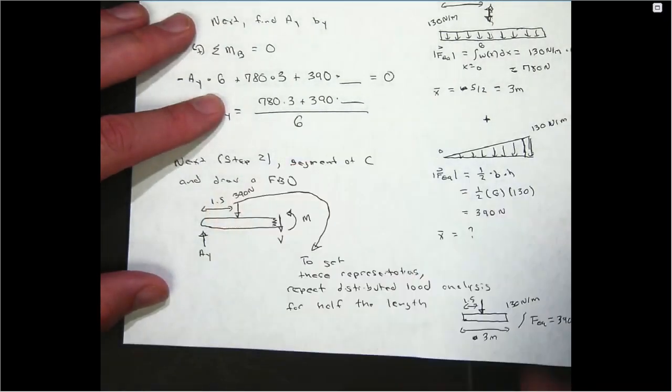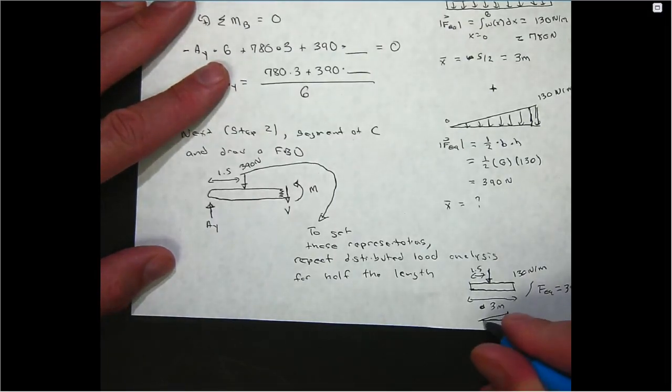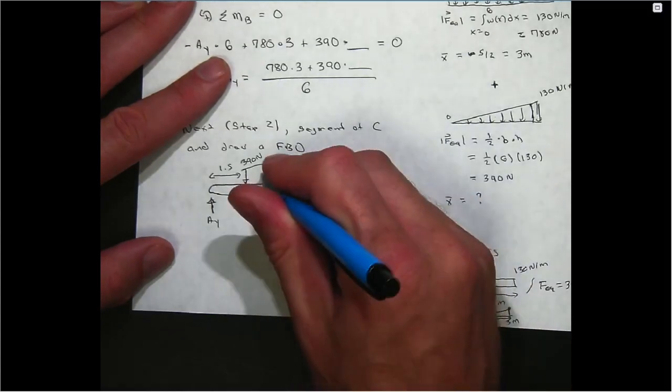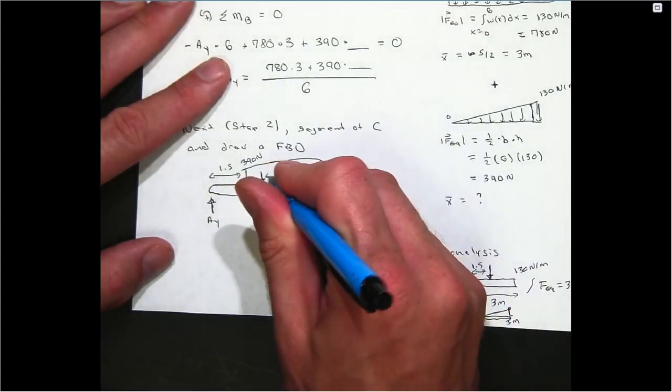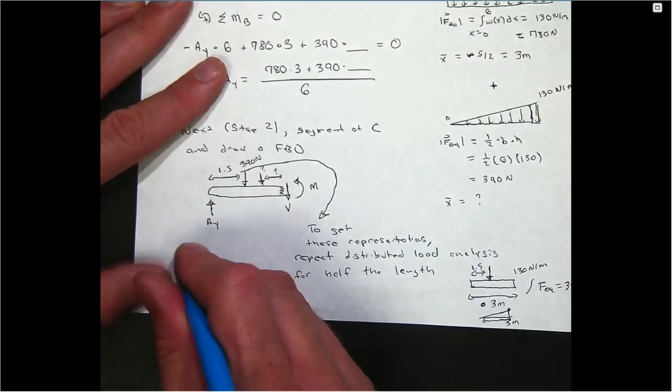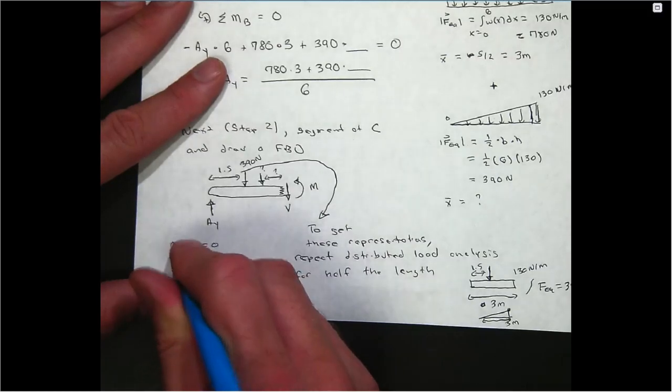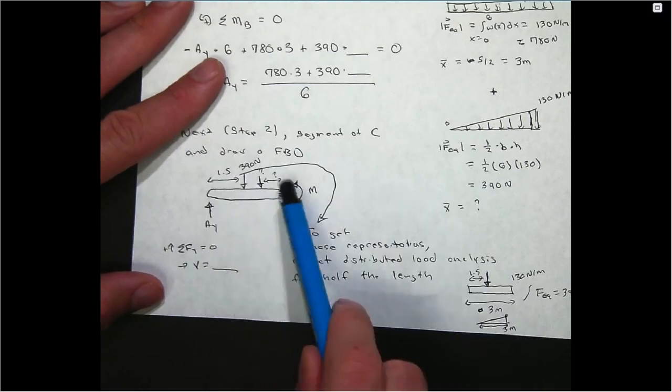Do the same thing for the triangle, but only include the base of 3. You might have to be careful how you compute this height from there. But what you should find is that you've got another load that is more towards the right again. You need to determine what this distance is and what this magnitude is. But once you have that, just sum all forces in the y direction and set that equal to zero. You'll find that you can solve for V directly because you'll know all these values.